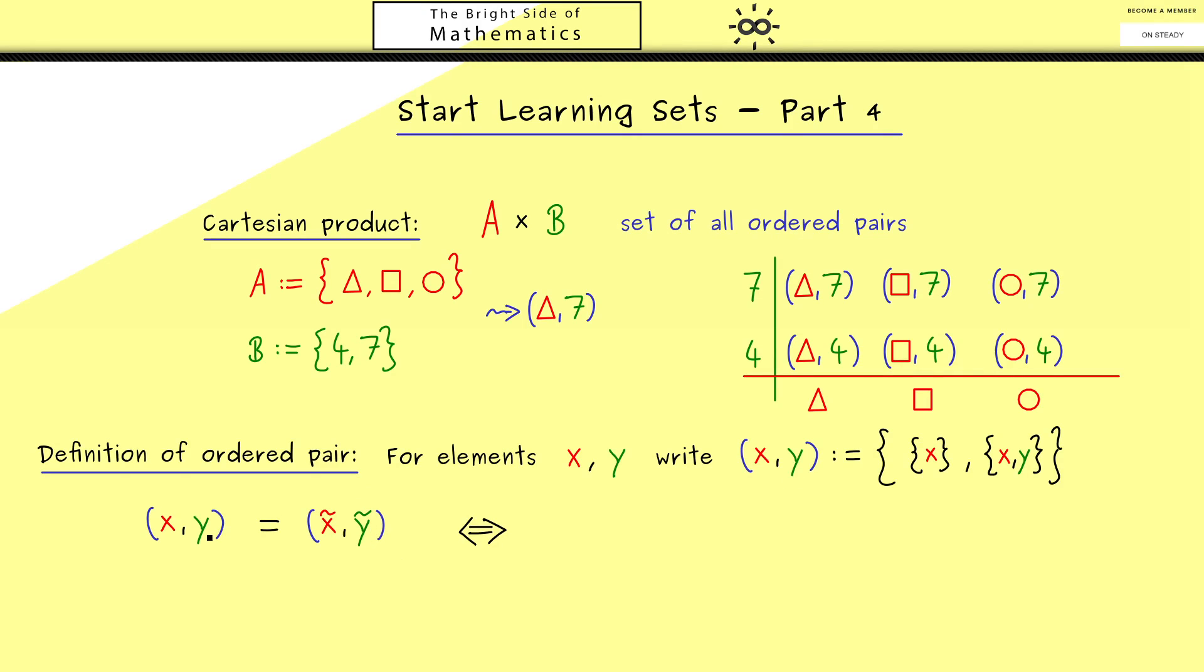Now, since we know that two sets are equal if and only if they have the same elements, we can write down this is logically equivalent to: the set with x is the same as the set with x̃, and the set with x and y is the same as the set with x̃ and ỹ.